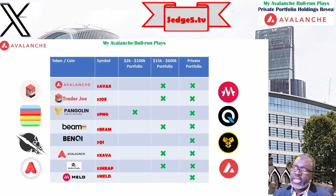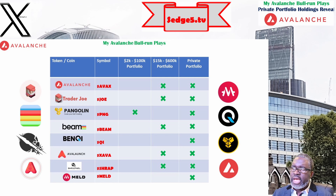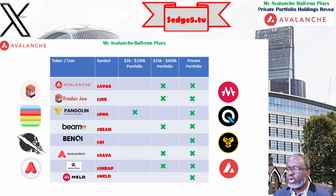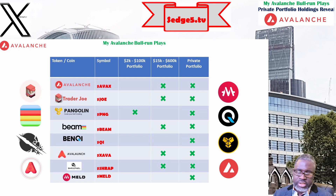Next we have Beam, formerly Merit Circle, which is a gaming project that has moved to Avalanche as a subnet. I do hold Beam within my private portfolio and it also features in the 15k to 600k crypto public portfolio. I have high expectations for this one and will not be surprised to see it grow into possibly the largest bag I hold within the Avalanche ecosystem — that's how much faith I have in Beam.